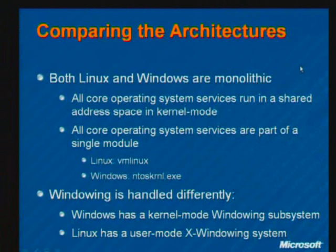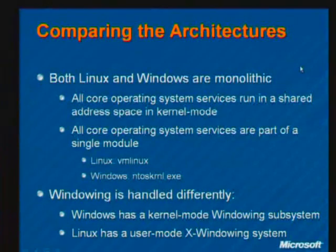That transmission of messages causes a performance hit, so most commercial operating systems are monolithic, including Windows and Linux. If you've heard of OS X, Apple's operating system based on the Mach operating system from Carnegie Mellon — Mach is a microkernel-based OS — but OS X takes the Mach kernel and makes it into a monolithic operating system, so OS X really isn't an example of a microkernel-based OS.